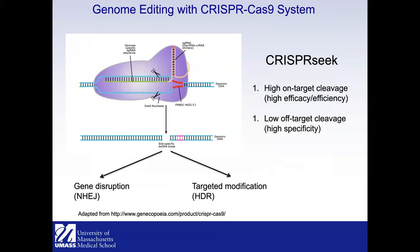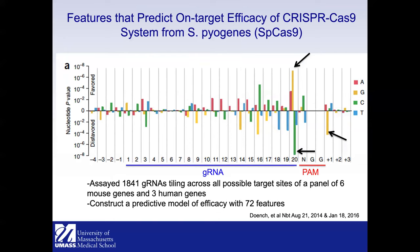Once the double-stranded break is made, the cellular repair mechanism kicks in to make a gene disruption or targeted modification using either non-homologous end joining (NHEJ) or homology-directed repair (HDR) if a template is supplied. When designing guides, you scan the sequence for the PAM sequence NGG, but when you introduce a nuclease, another consideration is to avoid cleavage elsewhere in the genome — called off-targets. The design goal is maximizing on-target efficiency while minimizing off-target cleavage.